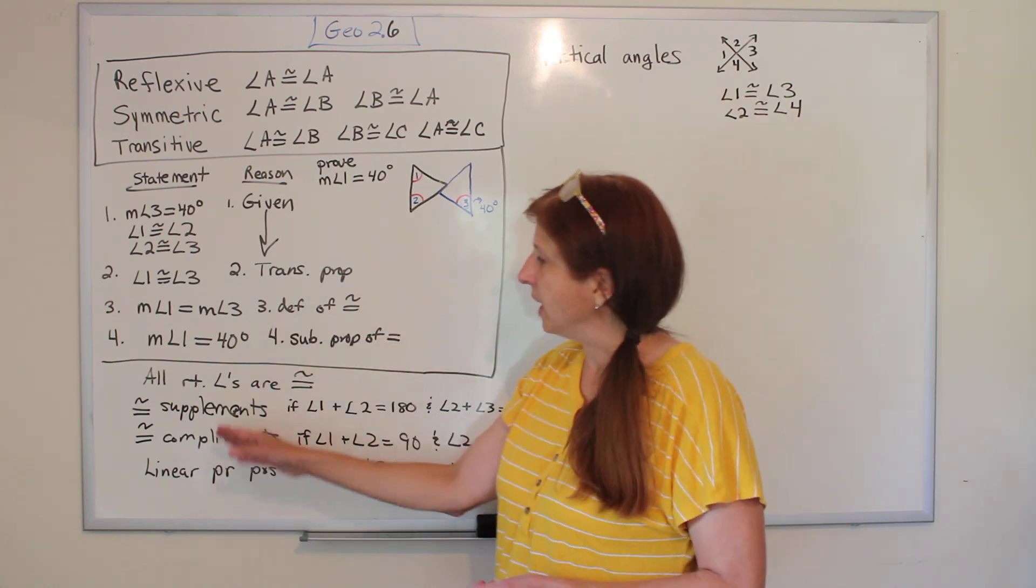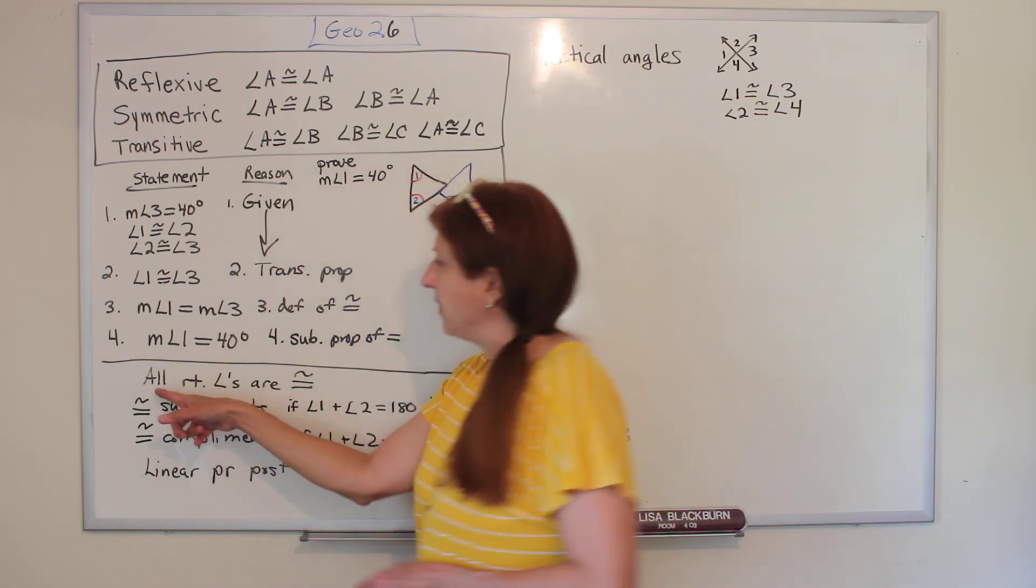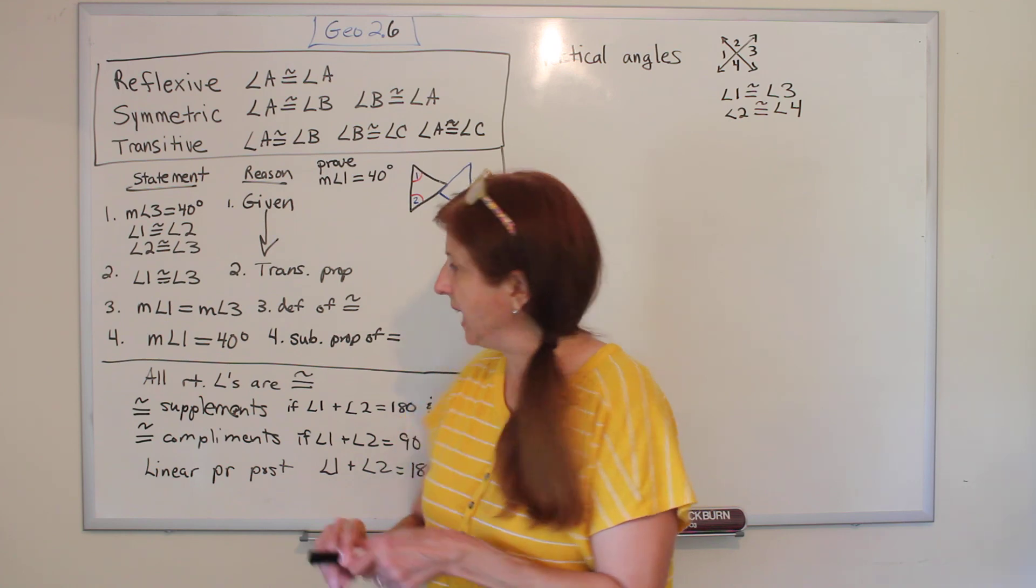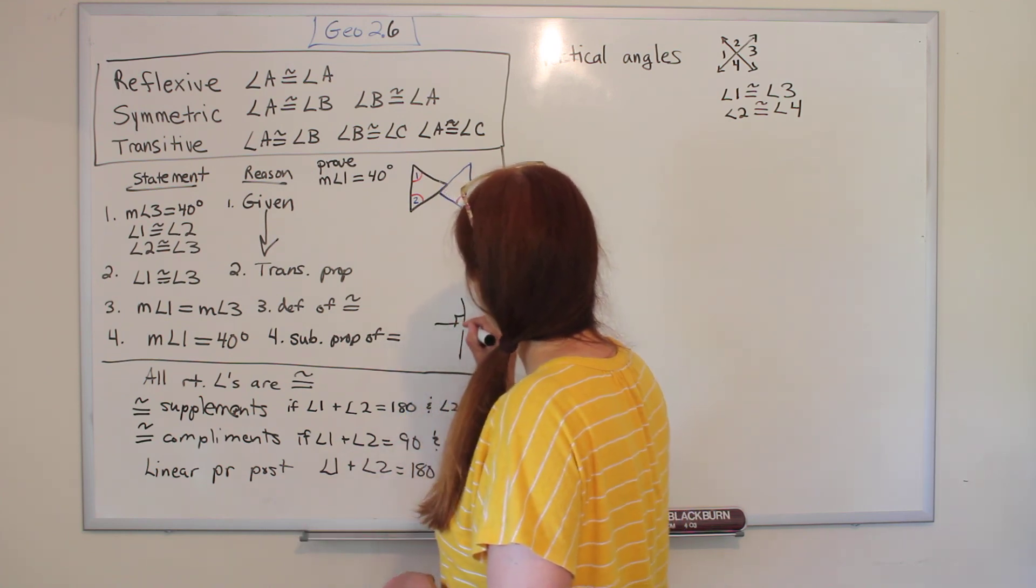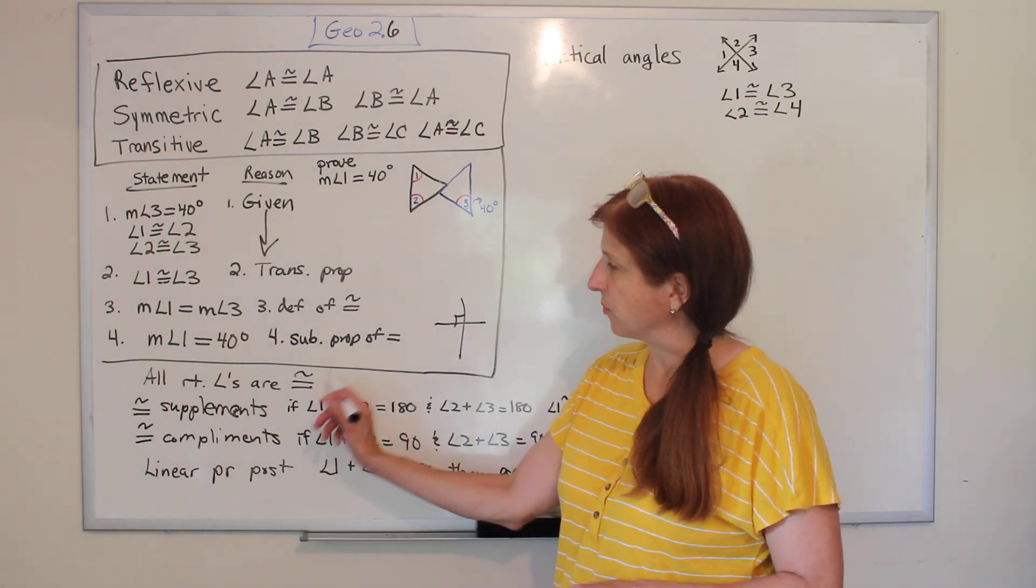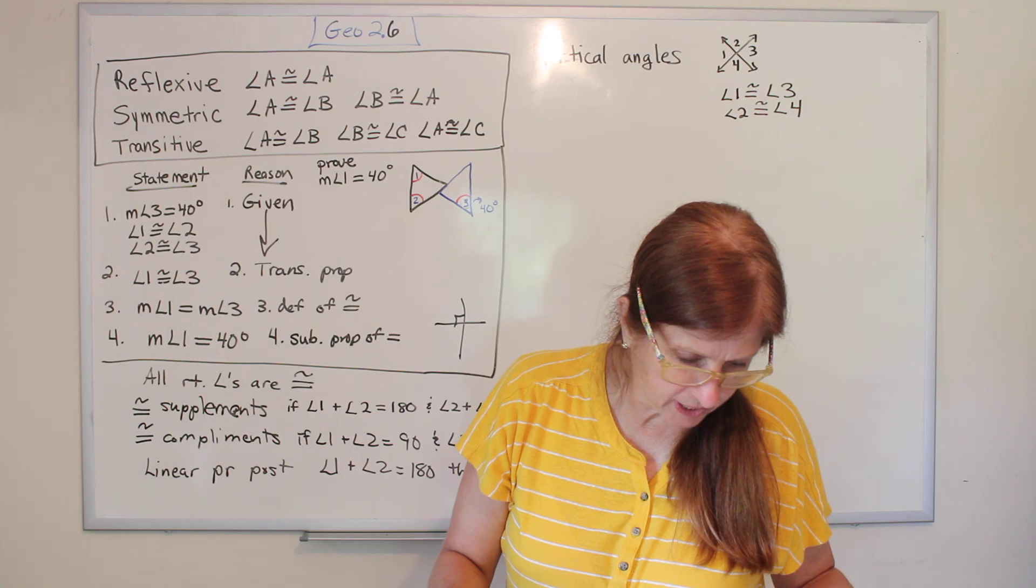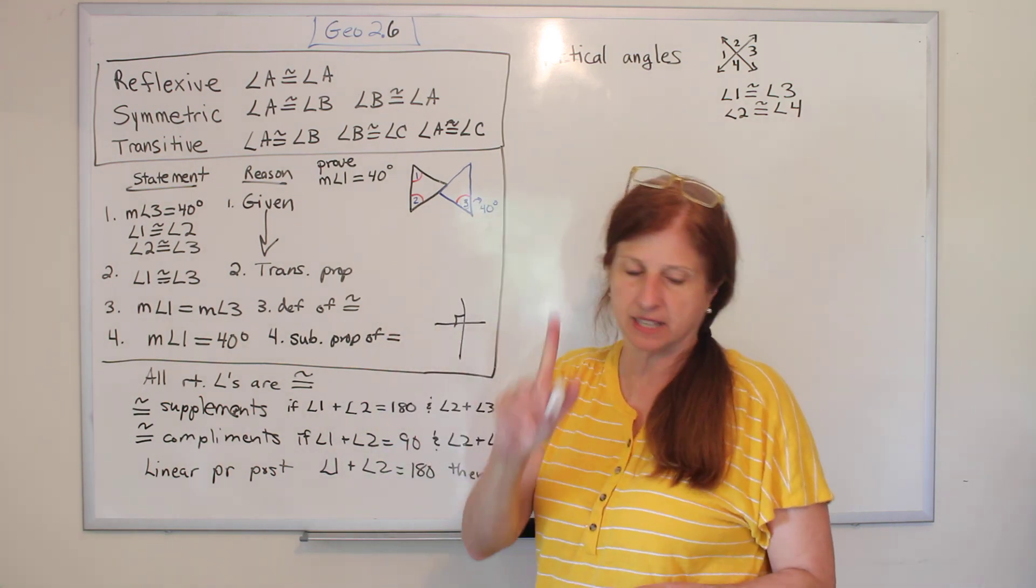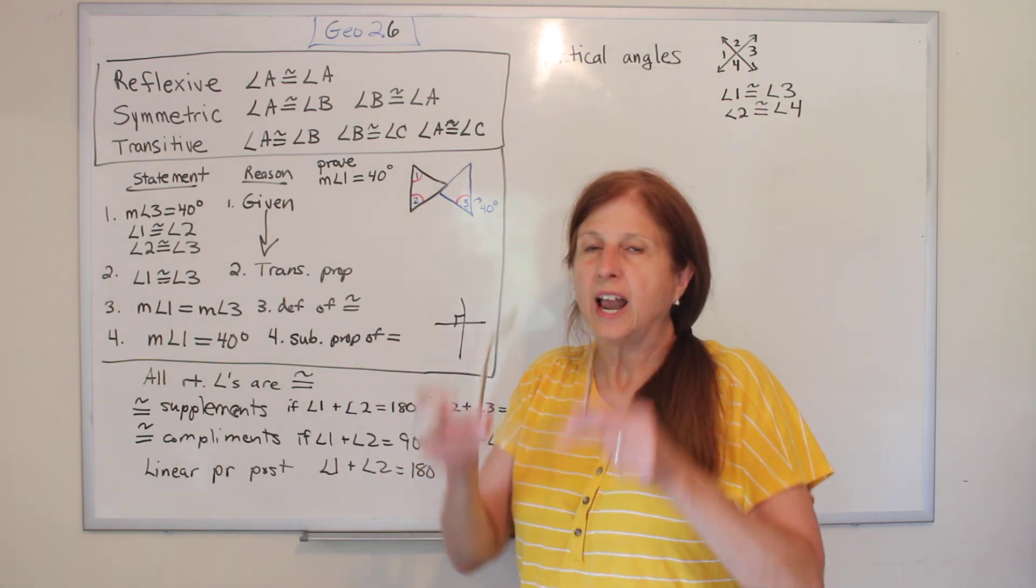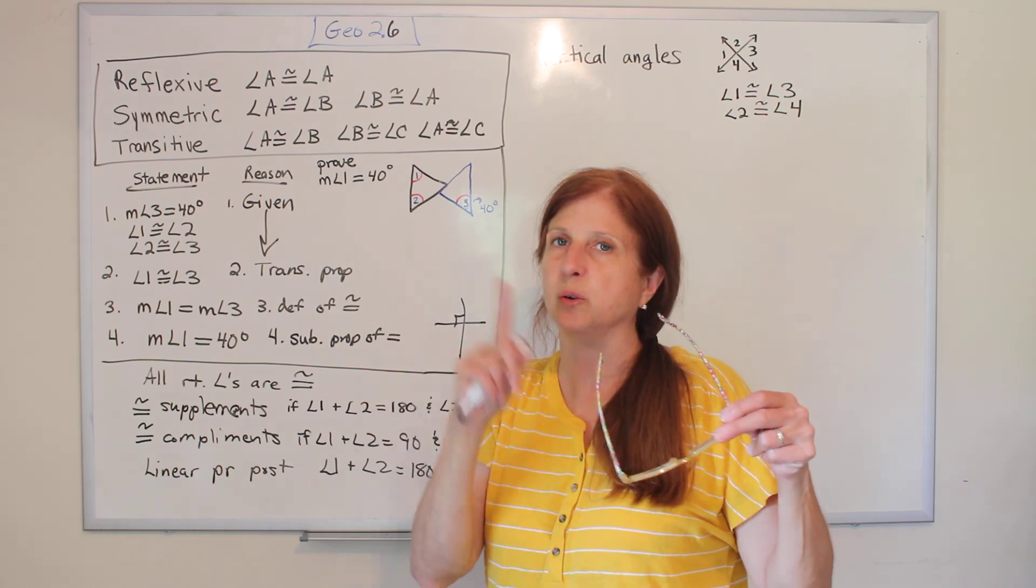Then I want to go down here. So here are some new postulates and properties I want to show you. The first one is that there's one that says all right angles are congruent. So if anything is ever marked as a right angle, that little square in the corner, then you can say that it is congruent to any other right angle, because they're all 90 degrees. So it is the right angle congruence theorem. I kept wanting to call it a postulate, but it's a theorem. The right angles congruence theorem. Okay, the next one, and these are in green boxes in your book, and they're also in the back of your book. There's a list of all the postulates and theorems, but you're only allowed to use ones that we've gotten to in proofs.